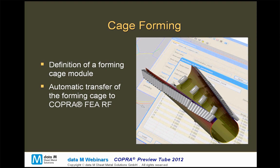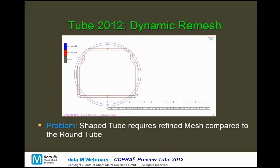The forming cage can also be transferred to COBRA FEA/RF for FEM simulation of the project, and this can also be done automatically by just pressing a button. Now let's come to the innovations we will present at the Tube Fair.